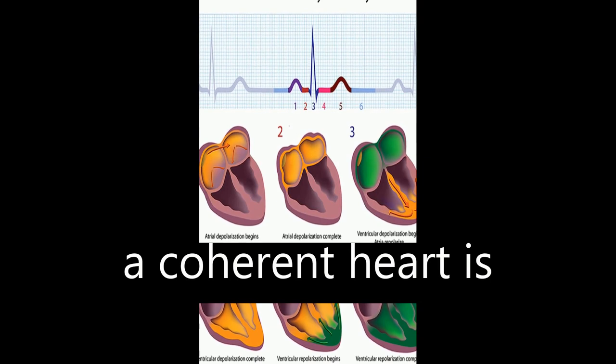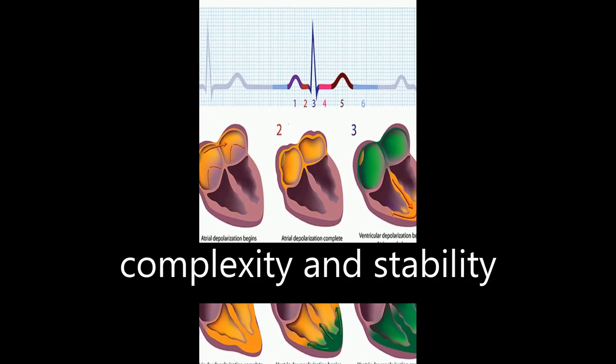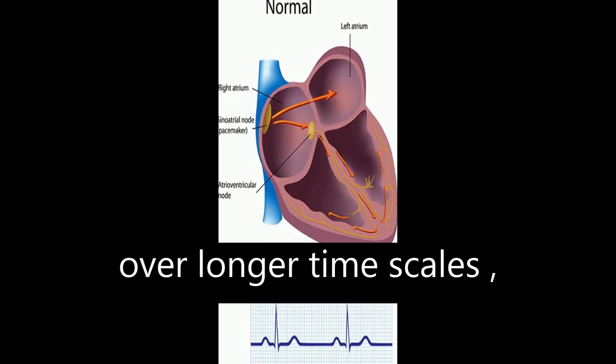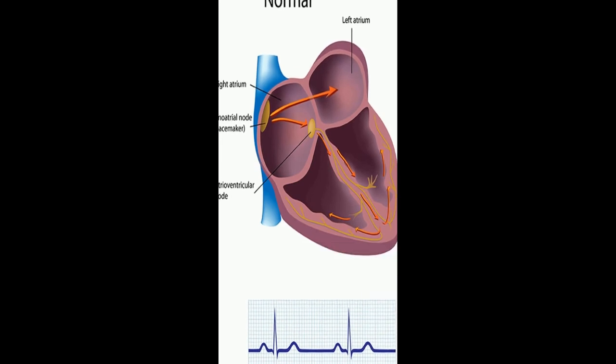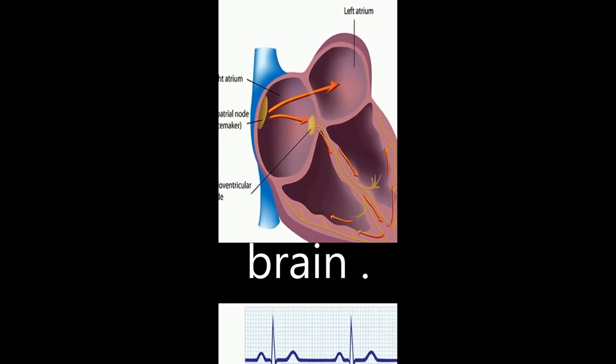The authors conclude that a coherent heart is characterized by both complexity and stability over longer time scales, and future research should expand understanding of how the heart influences the brain.